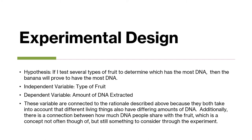If I test several types of fruit to determine which has the most DNA, then the banana will prove to have the most DNA. The independent variable is the type of fruit and the dependent variable is the amount of DNA extracted. These variables are connected to the rationale described above because they both take into account that different living things also have differing amounts of DNA. Additionally, there is a connection between how much DNA people share with the fruit, which is a concept not often thought of but is still something to consider throughout the experiment.